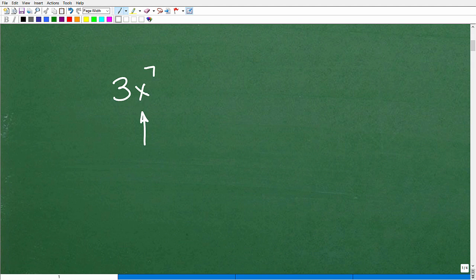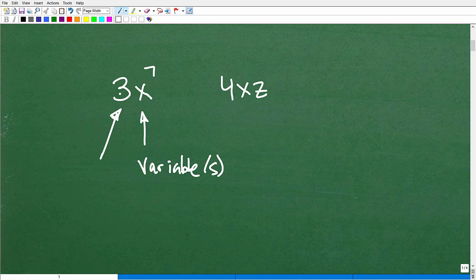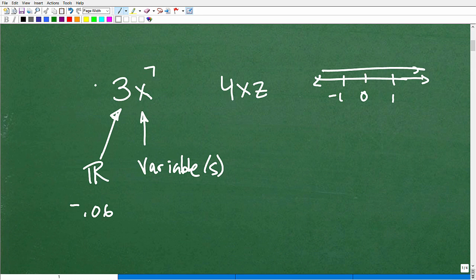Typically a polynomial will have a variable like an x or a y. It can have two things like x and z, like a 4xz. So it's not just limited to one variable. It can have multiple variables. And the number - so here we got a variable or variables. And then we have some sort of number in front of that variable. Now that number could be a whole number like three. It could be a decimal, like negative 0.06. So as long as it's what we call a real number - anything on the number line, a fraction, a negative decimal. Anything on the number line could be what we call the coefficient. That's the number in front of the variable.